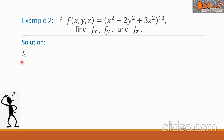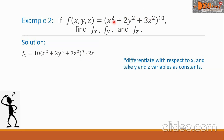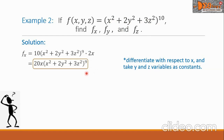Let's begin with f sub x. We differentiate with respect to x, taking y and z as constants. Since this is a composite function, by the chain rule the derivative is 10 times the quantity (x squared plus 2y squared plus 3z squared) raised to the 9th power, times the derivative of x squared, which is 2x. Simplifying, f sub x equals 20x times the trinomial raised to the 9th power.